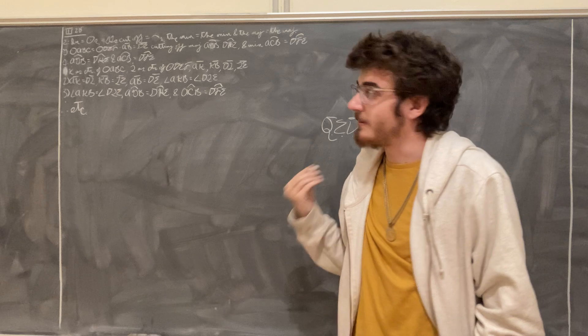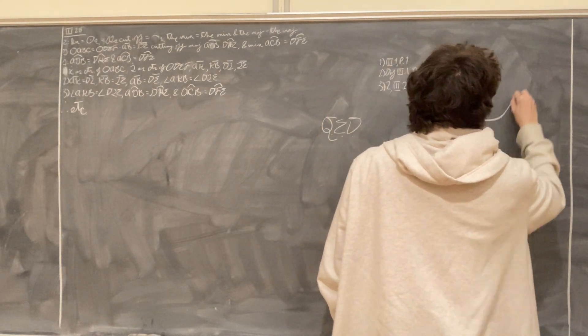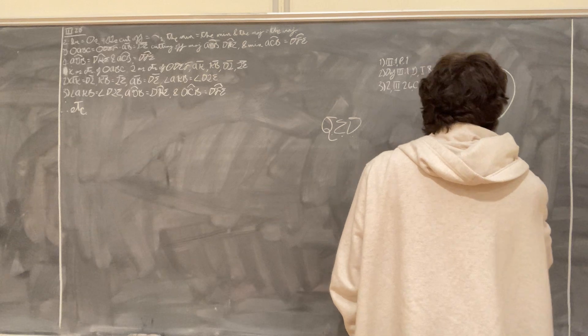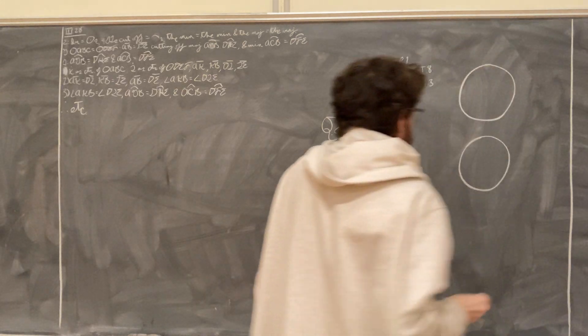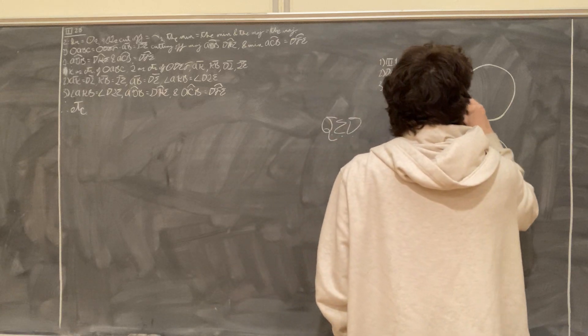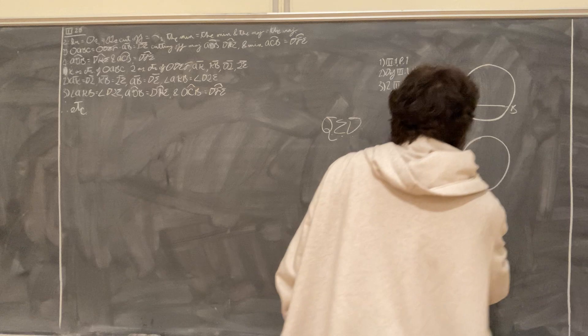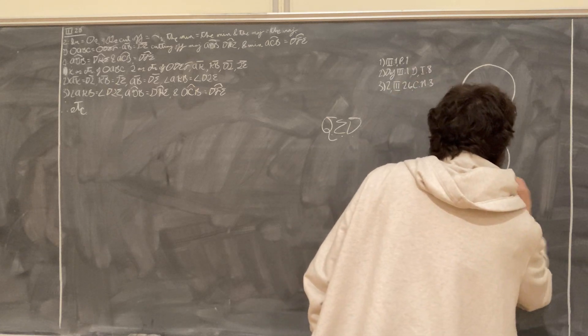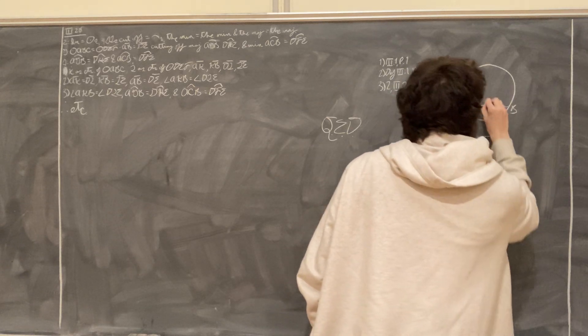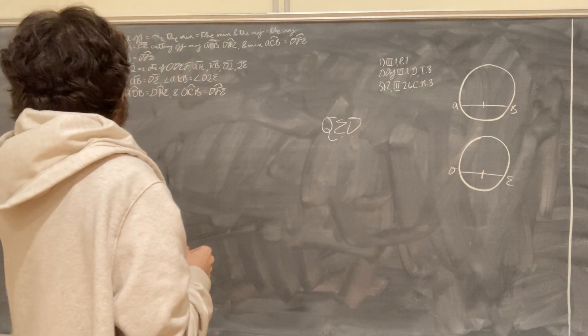What we are given is the circle ABC equal to the circle DEF, like so, and in ABC we have the straight line AB equal to the straight line DF in the circle DEF. The straight lines here are equal.